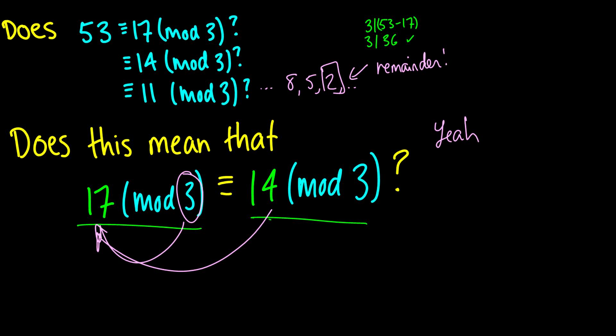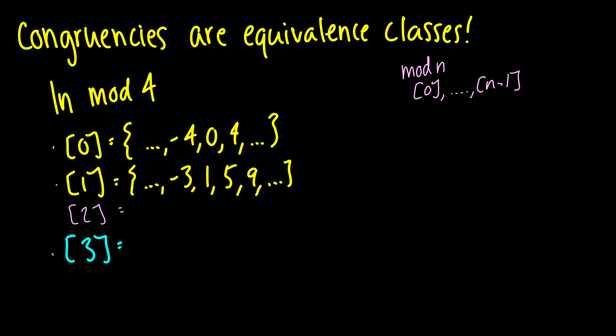So really, what these equivalence classes are, are they are the remainder of the division of, say, in this example we have 4. So every number divided by 4 that has a remainder of 0 is going to be the big number representing the equivalence class.